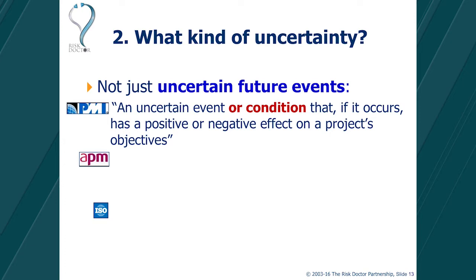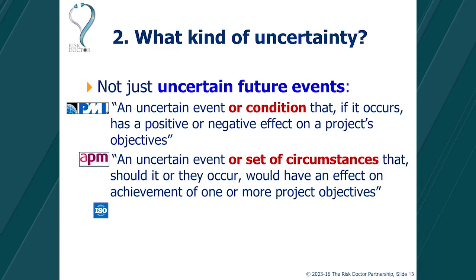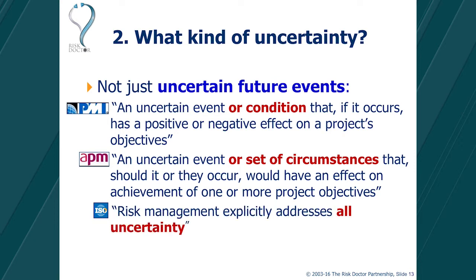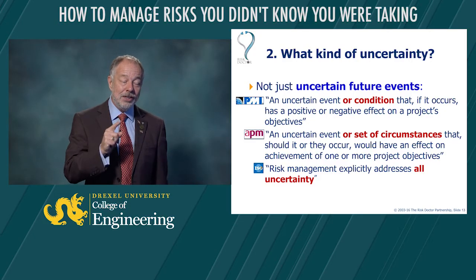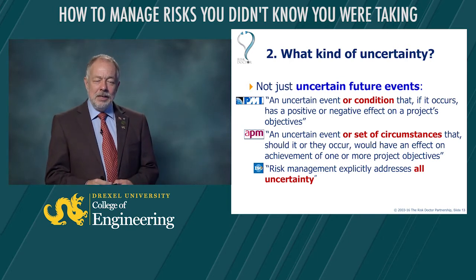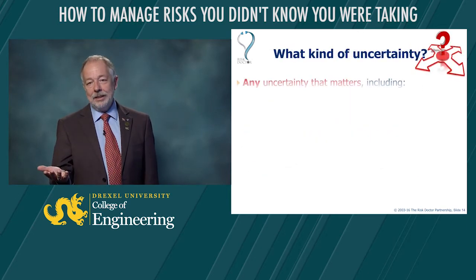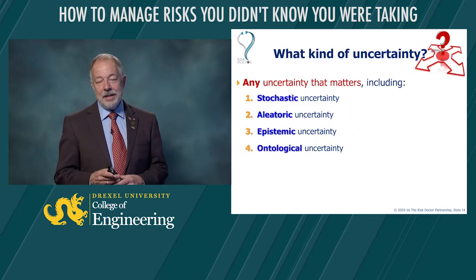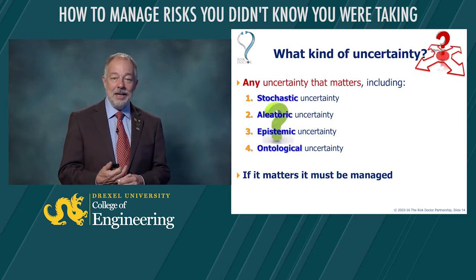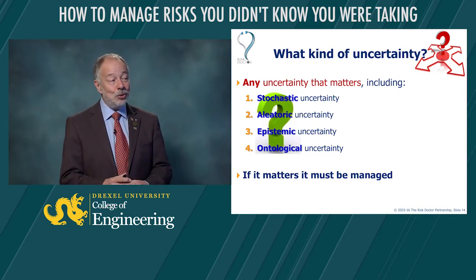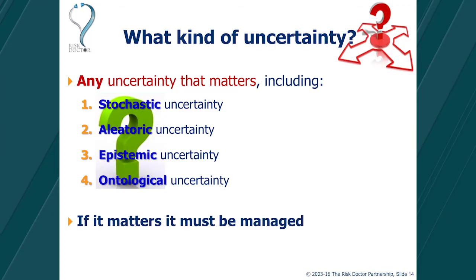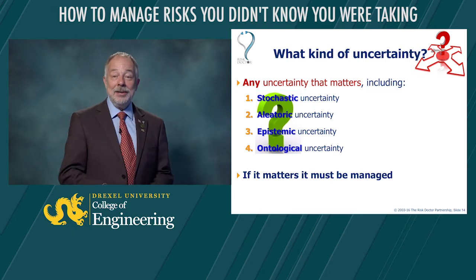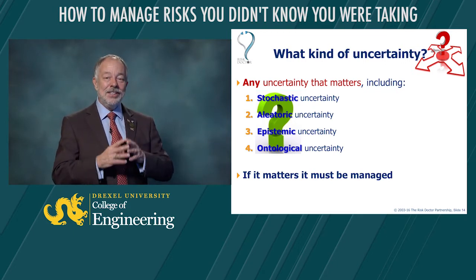So instead of just thinking about future uncertain events that could have a negative effect on the project schedule and budget, we need to think about negative or positive effects on any project objective. But what about the uncertainty side? What are we missing on the types of uncertainty we consider when thinking about risk? PMI, in its definition of risk, says something very interesting — that risk is not just about uncertain future events. The UK Association for Project Management says risk is an uncertain event or set of circumstances that affects project objectives. And ISO 31000 also says that risk management must explicitly address all forms of uncertainty, not just uncertain future events.